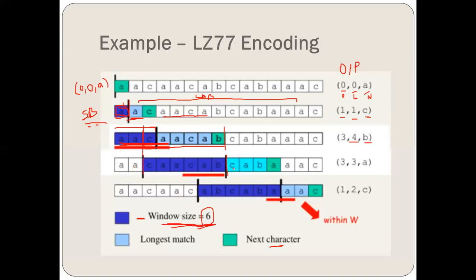Now we have C in the look-ahead buffer as the first symbol encountered. There is a match for C. Then C, A — yes, C, A is there. Then C, A, B — yes, C, A, B is there. Then C, A, B, A — no, that is not there. So the next character will be A, shown in green. The length is 3 because C, A, B are matched — 1, 2, 3. The offset, counted from the dividing line: 1, 2, 3 — so offset is 3. Output: offset 3, length 3, next character A.